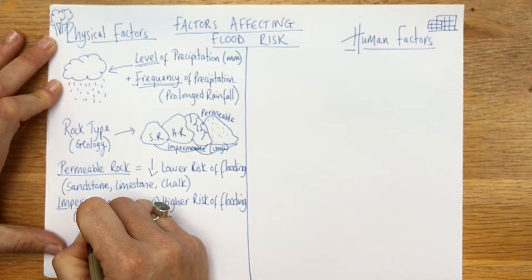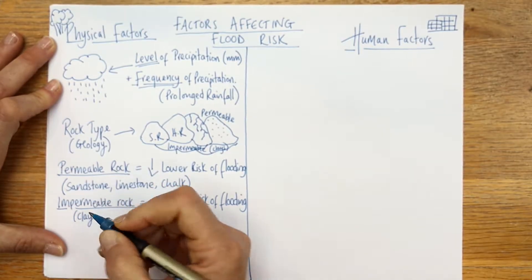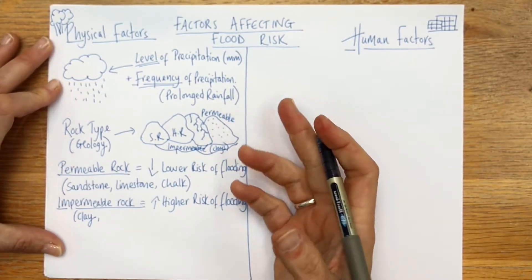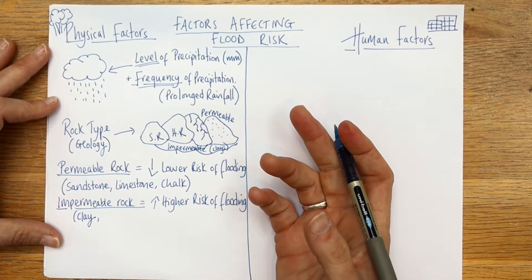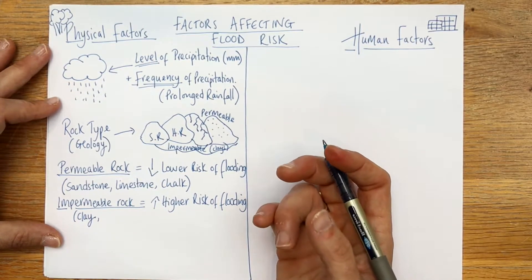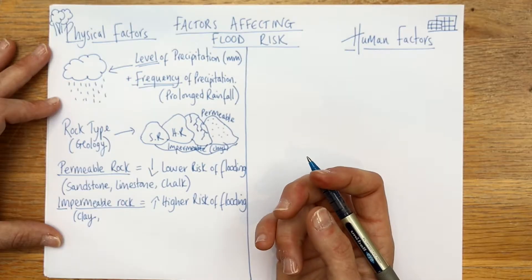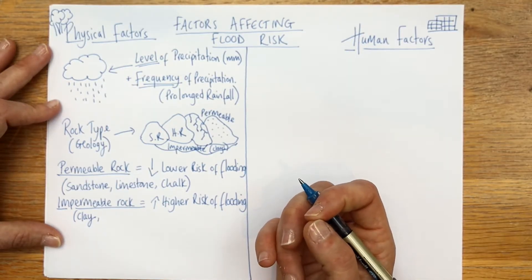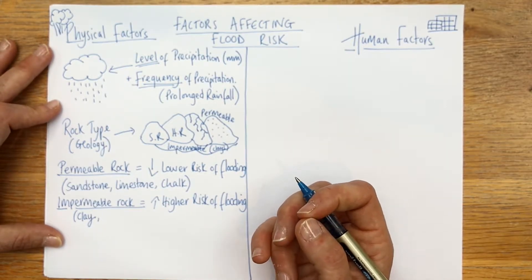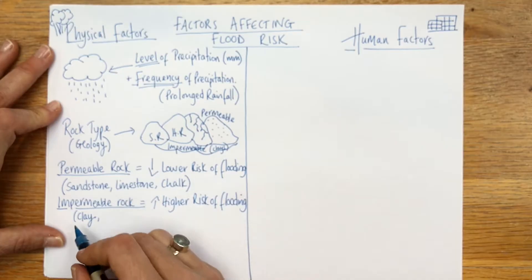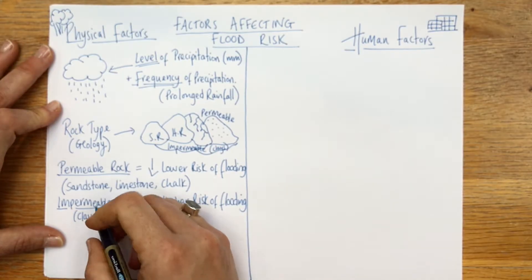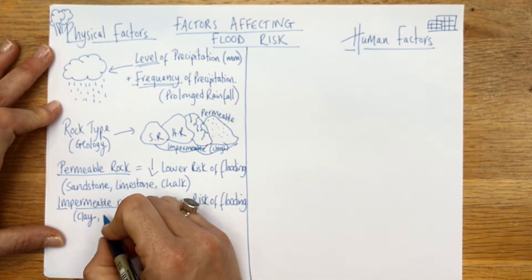You might expect impermeable rocks to just be hard, more resistant rocks like granite, but actually clay is very impermeable as well. That can cause real problems in areas of clay and granite.